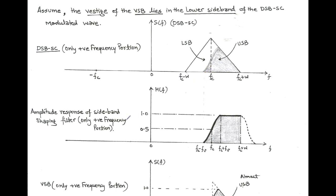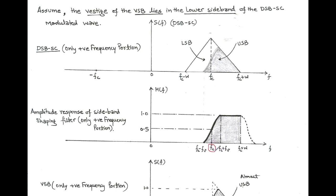For this, we use a specially designed bandpass filter called the sideband shaping filter. The amplitude response H(F) is shown in the figure, considering only positive frequencies. Since this is a specially designed bandpass filter, its transmission bandwidth is Fv plus W, limited between Fc minus Fv and Fc plus W. Here Fc plus W is the upper frequency and Fc minus Fv is the lower frequency, and their difference is the transmission bandwidth Fv plus W. Typically, the amplitude at Fc is 0.5 and at Fc plus Fv is equal to 1.